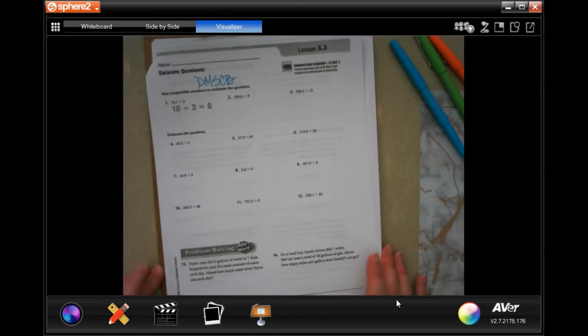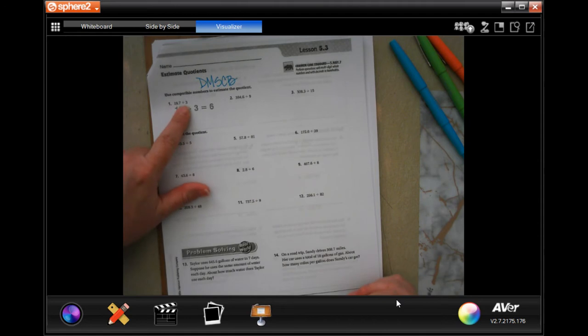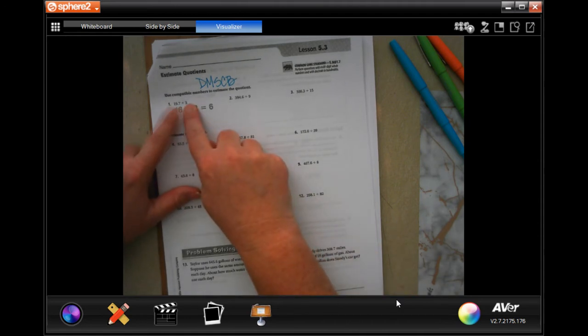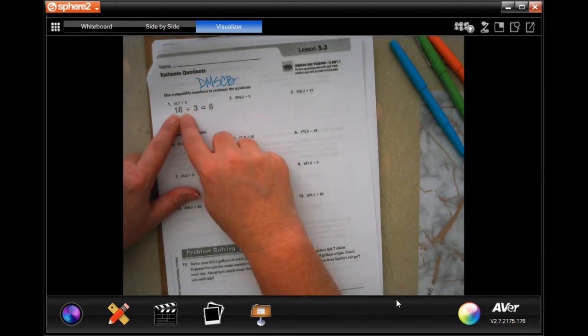Now these ones I want to use compatible numbers to estimate a quotient. By compatible it means if this number is 3, 3 doesn't go into 19, but 3 does go into 18. So that's what they're meaning - you change one of the numbers to go in a little smoother.